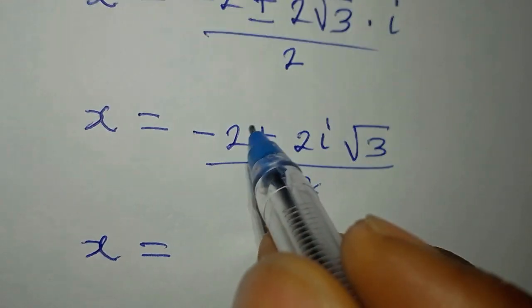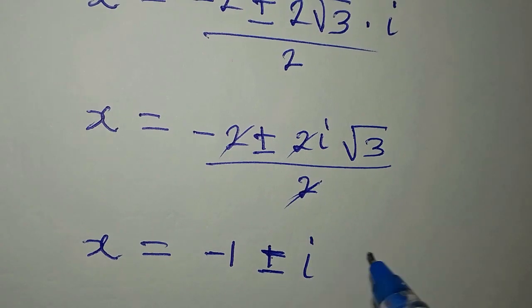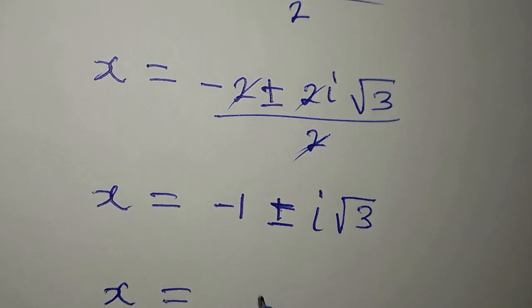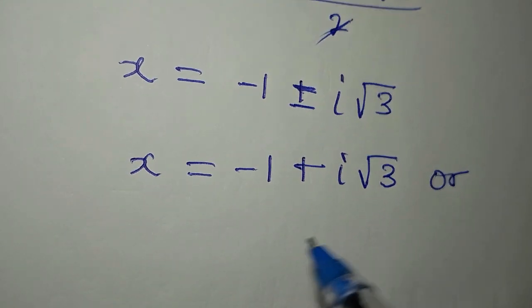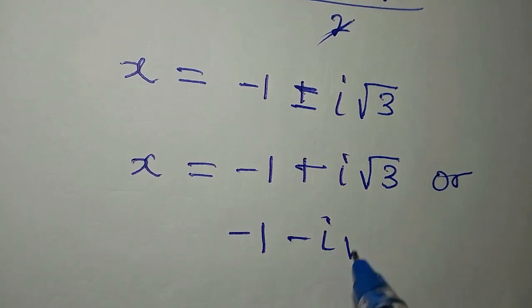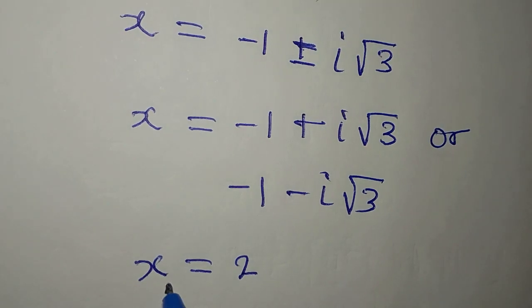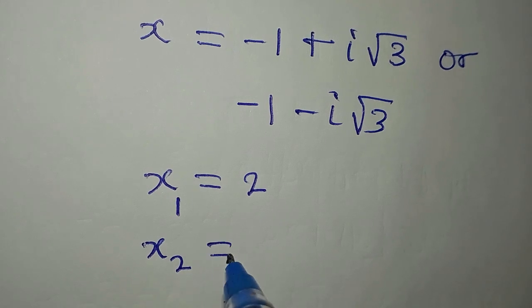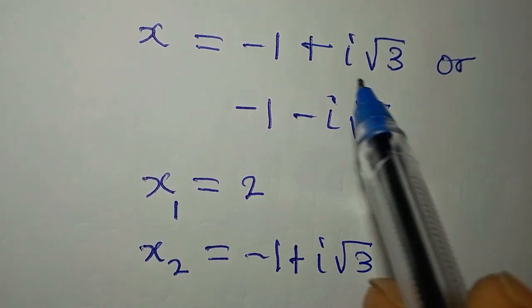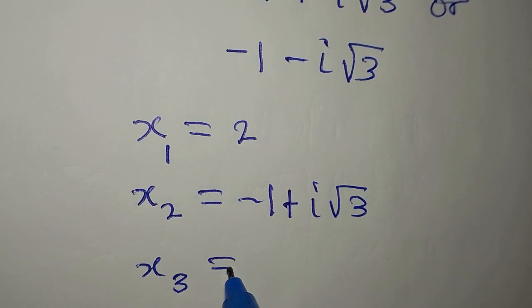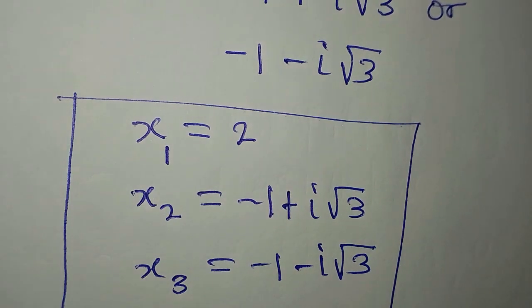2 can go into 2, we have minus 1, plus or minus i, then we have root 3. So we are saying that x equals minus 1 plus i root 3, or minus 1 minus i root 3. Mind you, we have three solutions already. The first is x equals 2, that is x1. Then the second is x2, which equals minus 1 plus i root 3. Then our x3 is minus 1 minus i root 3. These are the three solutions from the equation.